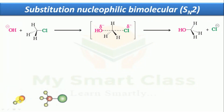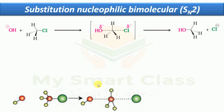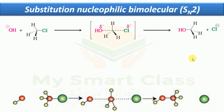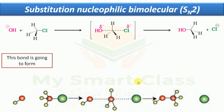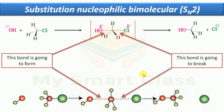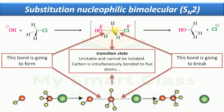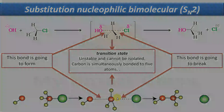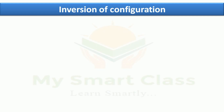The hydroxide ion attacks the chloromethane and forms a pentavalent transition state. In this transition state, one bond is forming and the other bond is breaking. After this, methanol is produced and chloride ion is removed. This transition state is unstable and cannot be isolated. This SN2 reaction is carried out by inversion of configuration.